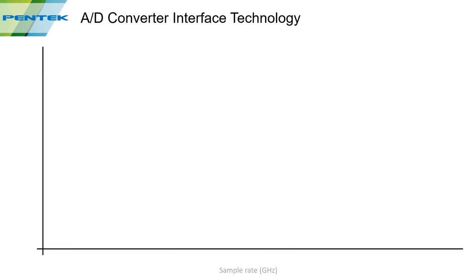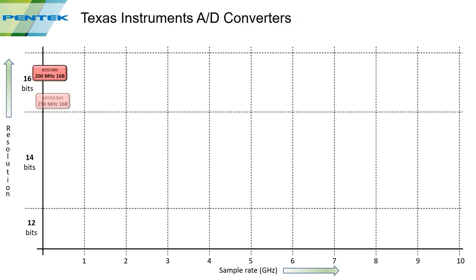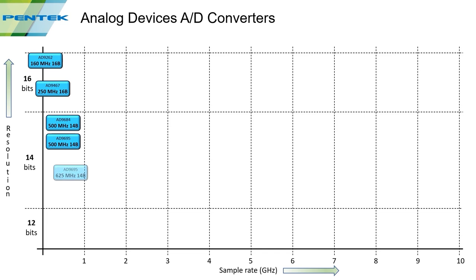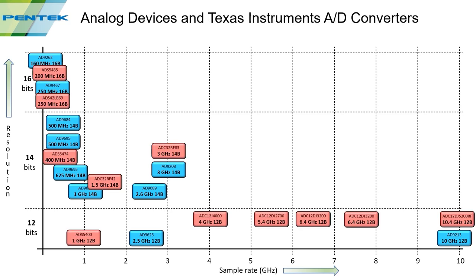Plotting these with sample rate versus resolution, starting at 200 MHz with 16-bit resolution, as the sample rate goes higher — up to 10 GHz — the resolution drops down to 12 bits, which is expected. Analog Devices follows the same curve, from 160 MHz at 16 bits down to 12 bits at 10 GHz. Overlaying both manufacturers, you can see they follow essentially the same curve.